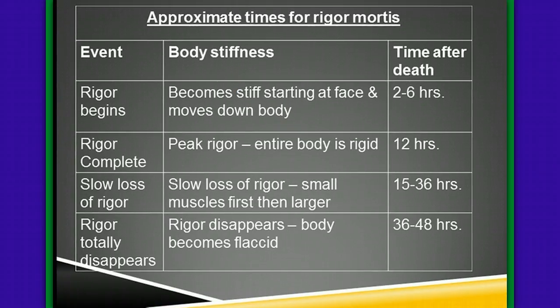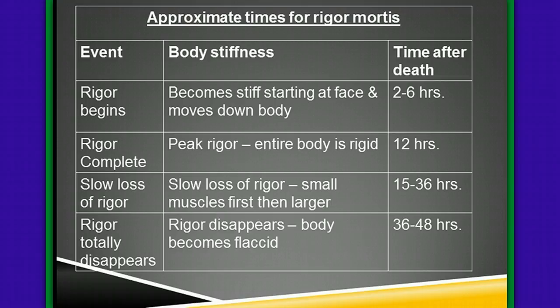When we look at these times — and there's a table in your packet — rigor begins somewhere between two to six hours after the person dies, with the body beginning to stiffen in the face first, then working its way down. At about 12 hours, rigor is complete and the entire body is rigid. Then between 15 and 36 hours, there's a slow loss of rigor, smaller muscles first then larger muscles. Between 36 and 48 hours the body becomes flaccid and very flexible again. Rigor mortis gives us a timeline to help determine time of death.